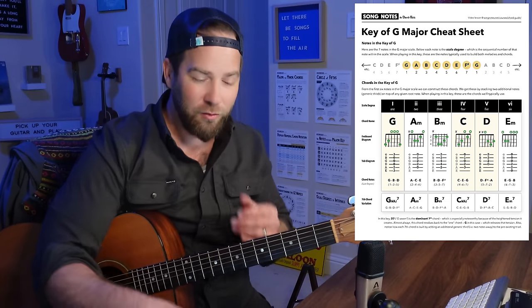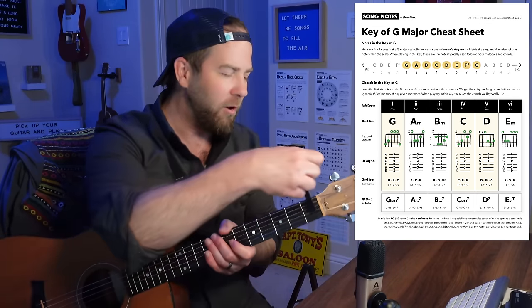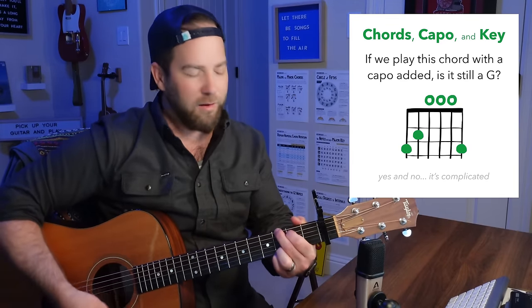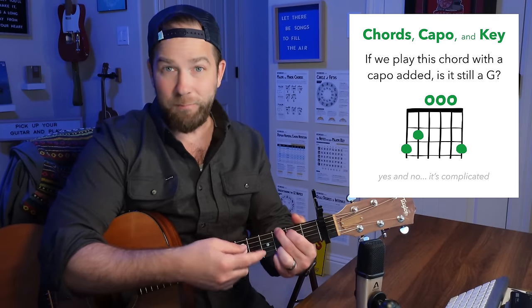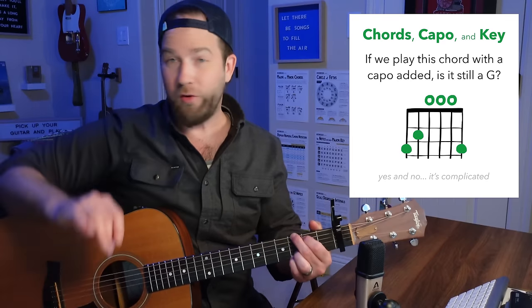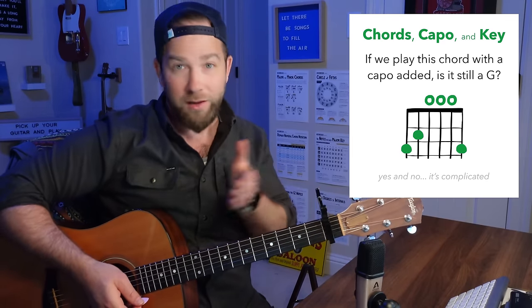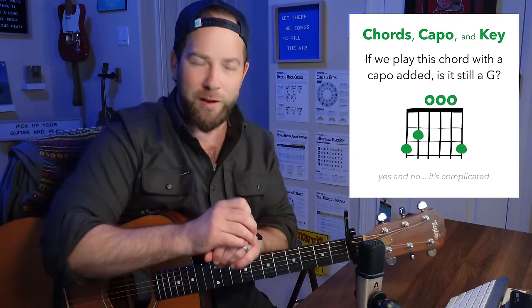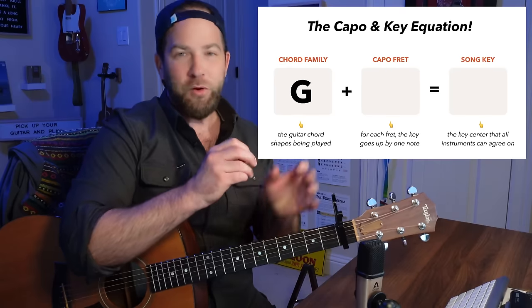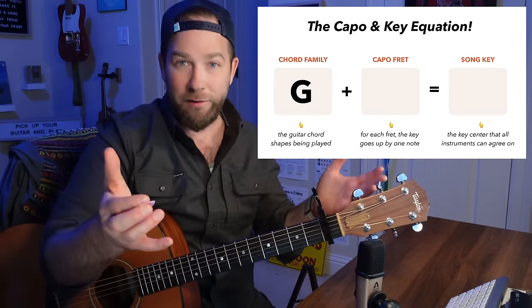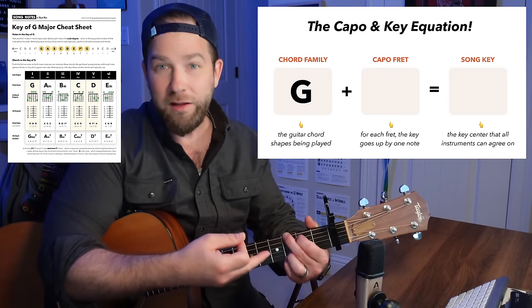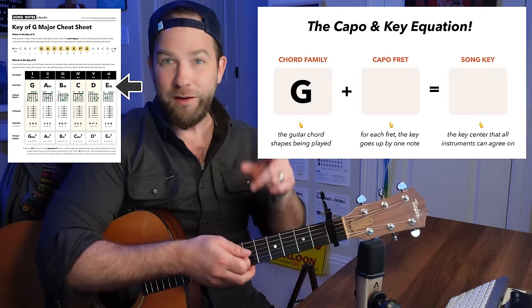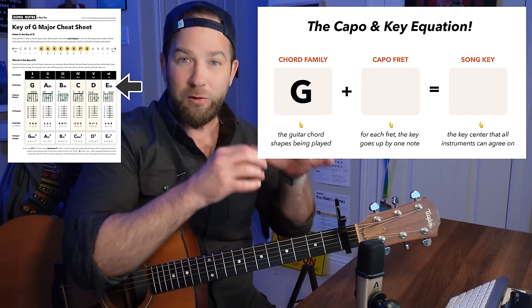Here's where things get tricky, and Judy, your question hints at this: once you throw a capo on, if I put a capo on any fret and play a G chord, technically the sound that chord is making is not G as far as the ear of another musician in the room. The capo is going to be raising things in pitch and it's going to change it out of G. So we need to separate those two things. I call these the chord family — the G, A minor, B minor, C, D, E minor — all the chords that belong to that key family.